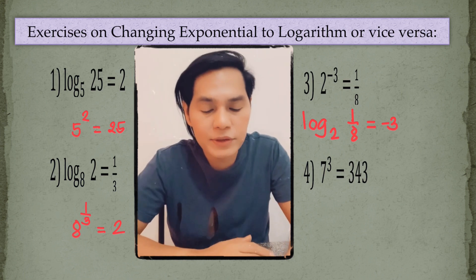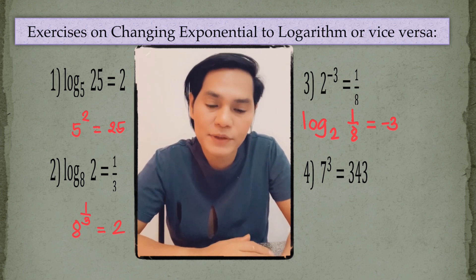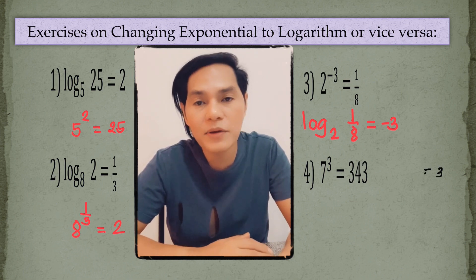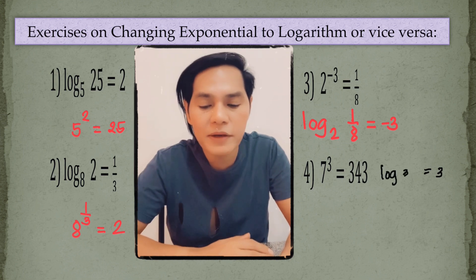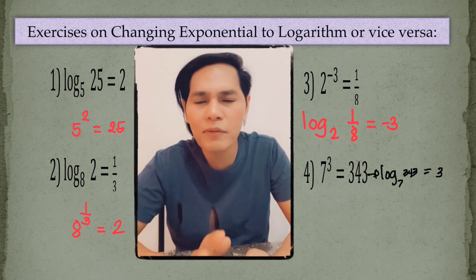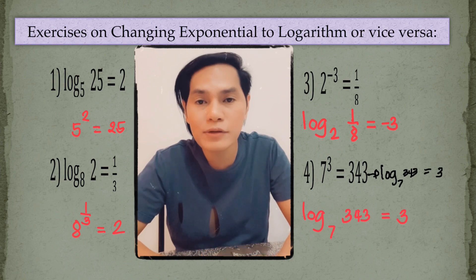And here, you should just simply write 3 first. You can just put equal sign and then there you go. You can write the log of 343 to the base 7 or whichever you are comfortable with to work on it. As long as you are giving the correct answer, then that's it.